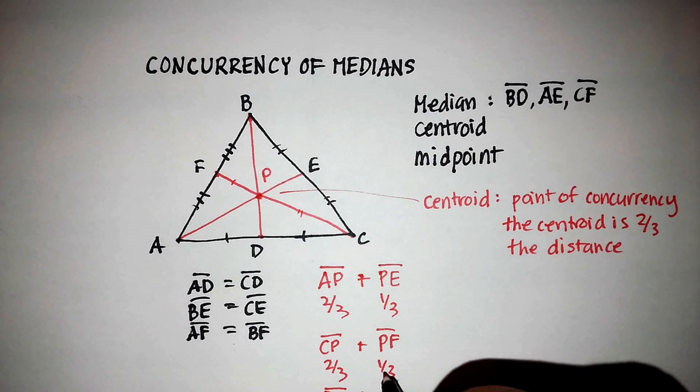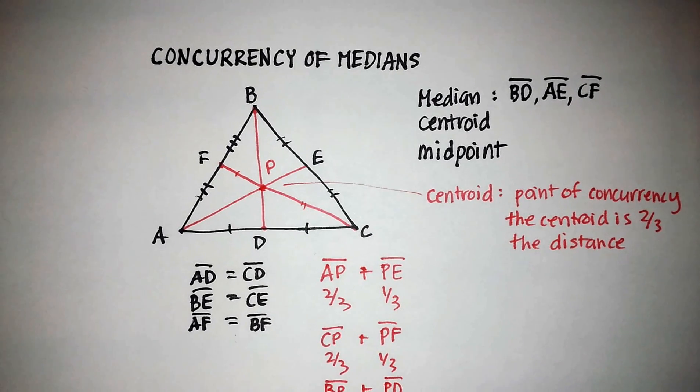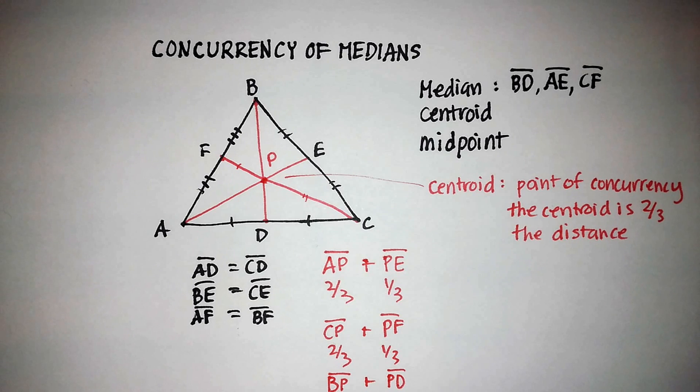And notice that I'm just adding them up to make it equal to one. But you really didn't have to do it that way. And that's called the centroid. I hope that was helpful.